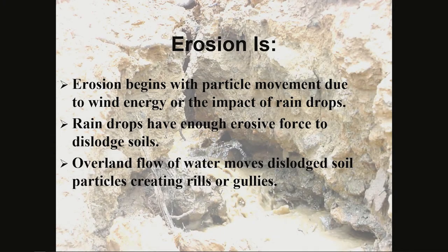A little bit more about erosion. Erosion is a process that begins with particle movement due to wind energy or the impacts of raindrops. Raindrops have enough erosive force to dislodge soils. Overland flow of water moves dislodged soil particles, creating rills or gullies.